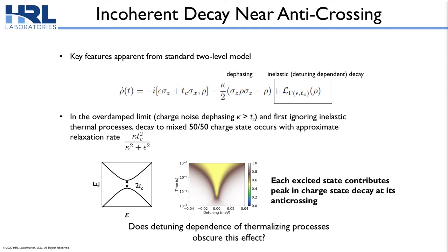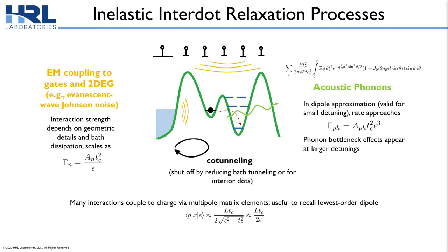The question is how inelastic thermalizing processes play a role, since they may also be functions of tunnel coupling and detuning and might wash out these transitions. There are various microscopic pathways for thermalization: co-tunneling is one, but that can typically be controlled by turning off the bath tunneling rate. More fundamental processes occur through acoustic phonon emission or electromagnetic interactions with electrons in the gates or nearby 2D electron gas. Most of these interactions scale with the charge dipole matrix elements, which scale essentially with the tunnel coupling similarly to the resonant transitions discussed earlier.